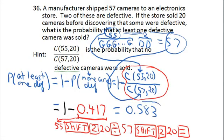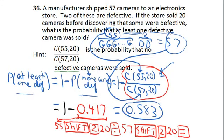One minus 0.417 is 0.583. So to three decimal places, the probability that you get at least one defective camera is 0.583. The key approach: at least one equals one minus none, then calculate none using combinations, and subtract from one.